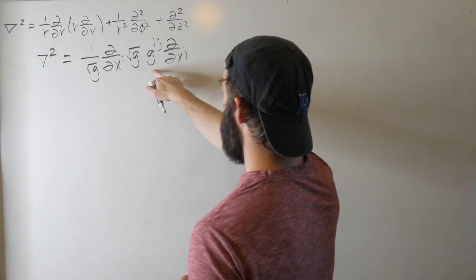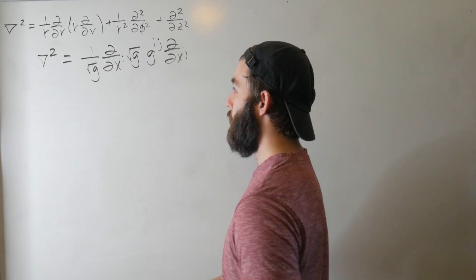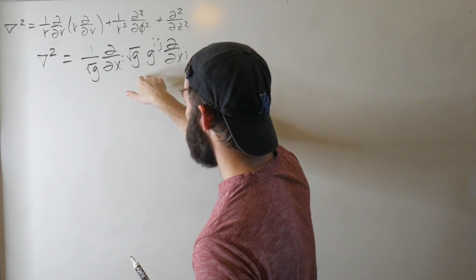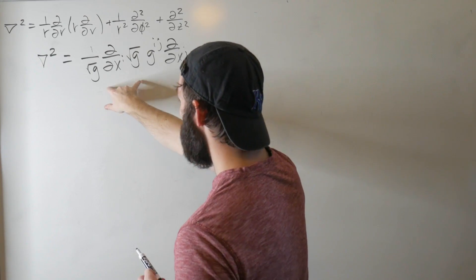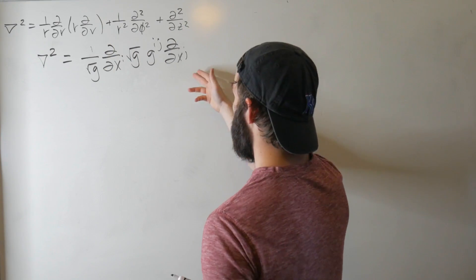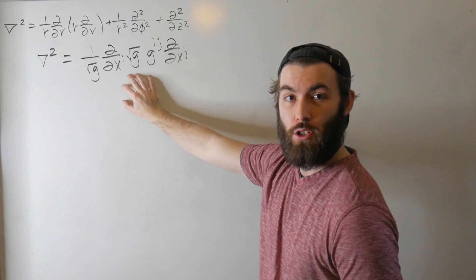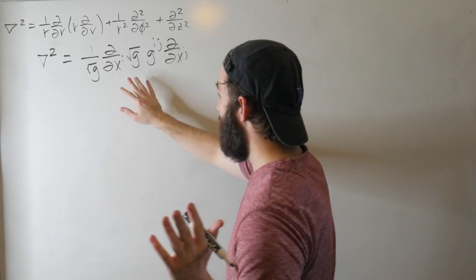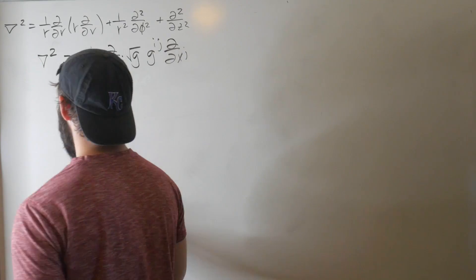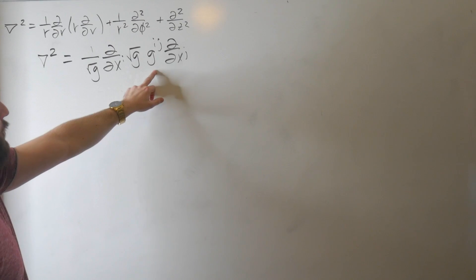This here is the contravariant component of the metric tensor, this is square root of the determinant of the metric tensor, the covariant one, and we're going to be finding out how to calculate these terms and see if using this equation we arrive at the Laplacian in cylindrical coordinates. So even though we're going to be working towards the Laplacian in cylindrical, the equation itself does not change for deriving it in spherical, which is why you get two things for one memorization, which is pretty powerful. So first things first is how do we calculate these terms?